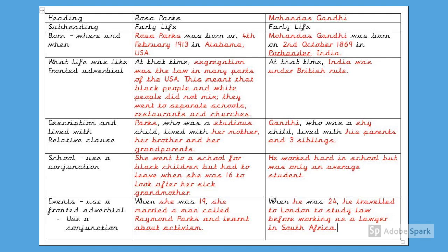If you did the lesson last week, you've already had a practice at writing the early life section of somebody's biography, so I'm not going to talk through this one step at a time. Everything that you might want to change is highlighted in red and the things that you might want to keep the same are highlighted in black. Although I've changed the part of the paragraph that relates to what life was like at that time — the sentence that starts 'at that time' — you don't have to change it, because the description for Rosa Parks' life also applies to Martin Luther King. Segregation was the law in many parts of the USA.